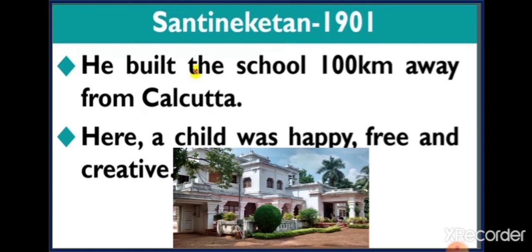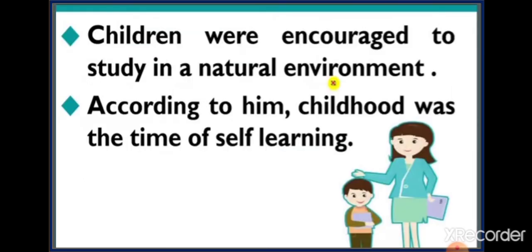According to Tagore, a child in Shanti Niketan was happy, free, and creative. There was no provision of fixed classrooms — the child was free to use their creative mind and curiosity. Studies were not meant only for competition. He wanted to set up a school where children were encouraged to study in a natural environment. According to him, childhood was the time of self-learning — children learn by themselves, and children should not be restricted to a classroom only.